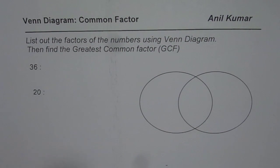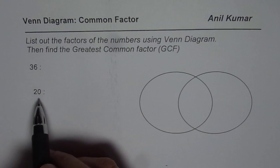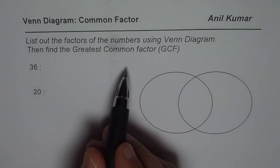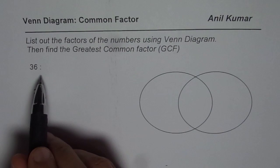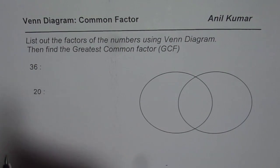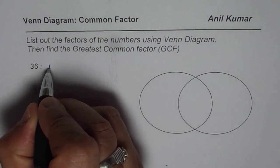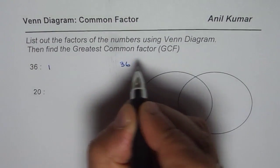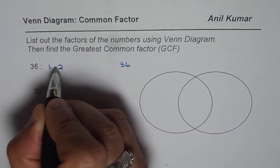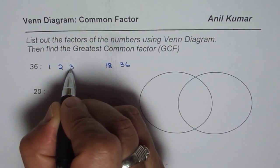Let us begin by writing factors of these numbers. So we will make a rainbow to write factors so that we are sure that we are taking care of all the factors. Begin with 1. So 1 times 36 is 36. 2 times what is 36? 2 times 18.